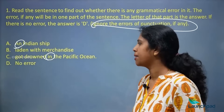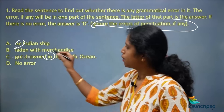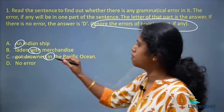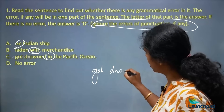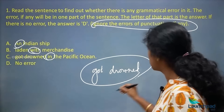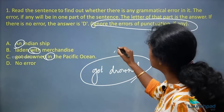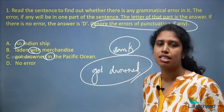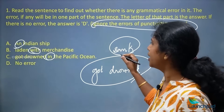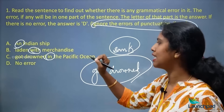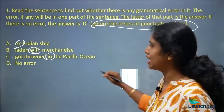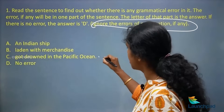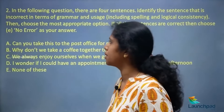Looking at the preposition 'with' — 'laden with merchandise' — that is also right. So what is left is 'got drowned.' Logically, 'got drowned' can be replaced with the word 'sank.' Whenever something happens to a ship at sea, we say it sank. So the correct sentence is: 'An Indian ship laden with merchandise sank in the Pacific Ocean.' The error is in part C, so the right answer is C.